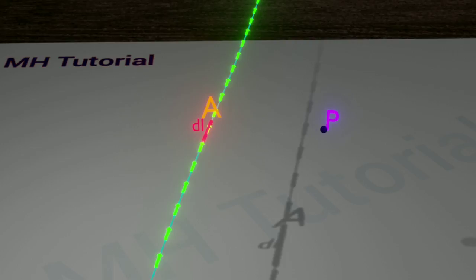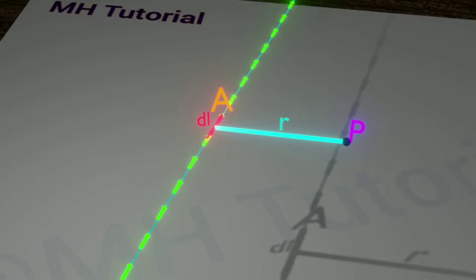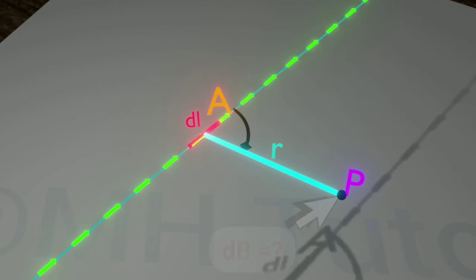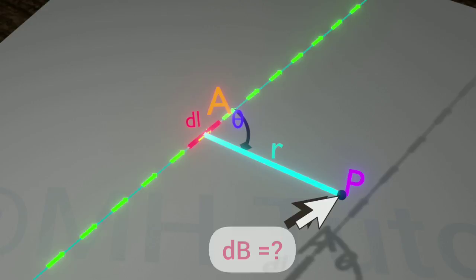Distance between point A and point P is R. We shall now calculate the magnetic field at point P due to this small portion of the wire. So, let's start.